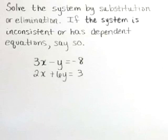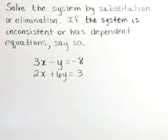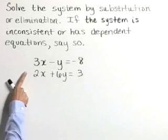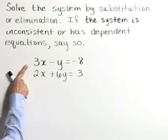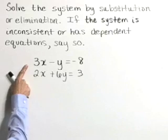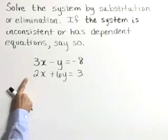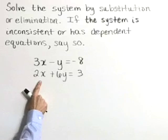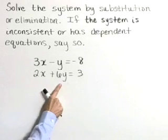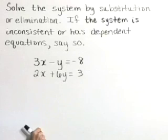Solve the system by substitution or elimination. If the system is inconsistent or has dependent equations, say so. Here we have the system consisting of equations 3x minus y is negative 8 and 2x plus 6y is equal to 3.